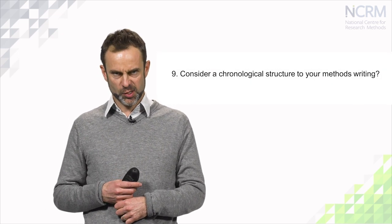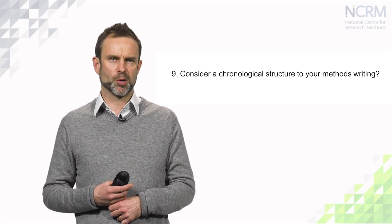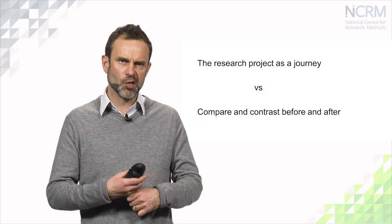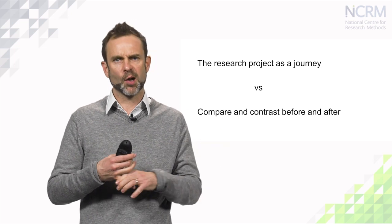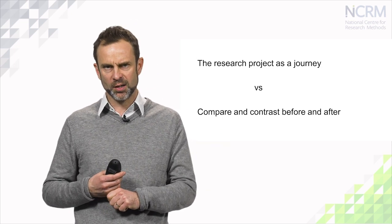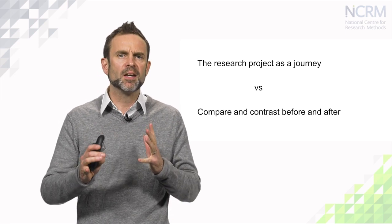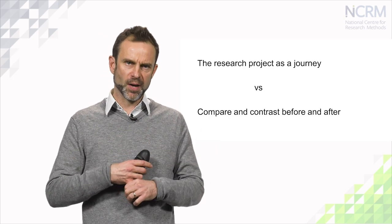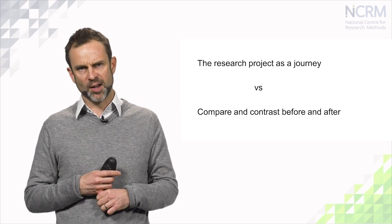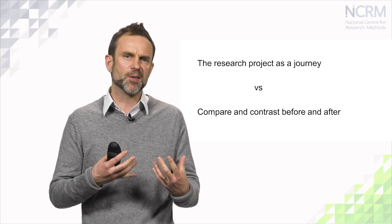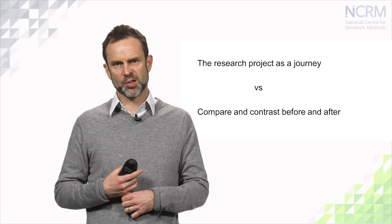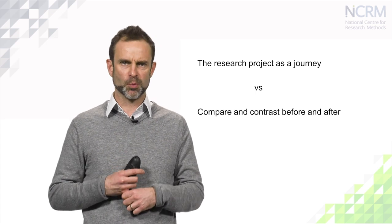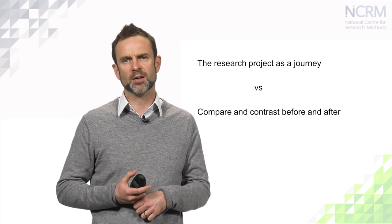Another common approach to writing about research methods is a chronological approach. This can either be setting out the research project as a journey from A to B — ticking off the key points along that journey — or equally commonly, in the form of a before and after structure: this is what I did in my pilot, this was what my hypothesis was, and this is what I ended up doing. Both approaches lend themselves to a full discussion of core research methods decisions and are very handy ways to structure your own engagement with method and plan your own writing.